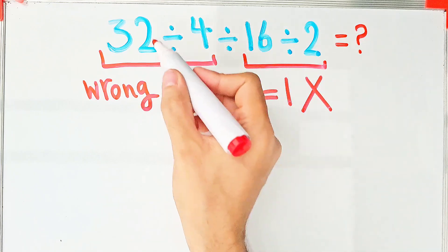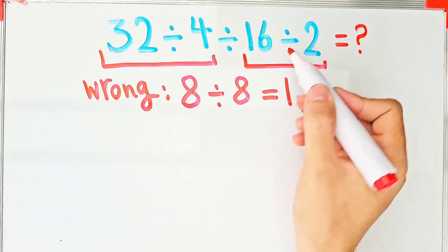When performing multiple divisions in a row, we proceed from left to right.